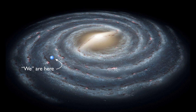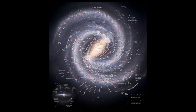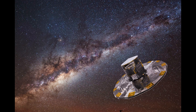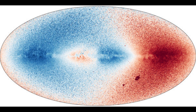Now we know the approximate shape and our location, but the exact details — such as the arms or bridges — are still being studied by special space telescopes. For example, the European Space Agency's Gaia telescope measures the positions and velocities of a billion stars in our galaxy, creating the most detailed three-dimensional map of the Milky Way. An image based on Gaia data shows radial velocities of 7 million stars, with red moving away from us and blue approaching — revealing the rotation of our galaxy.